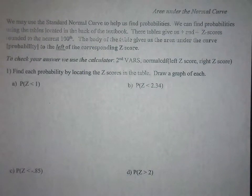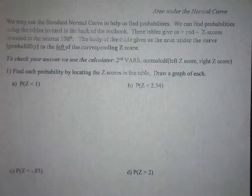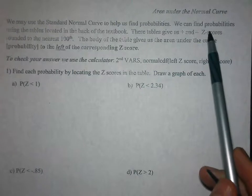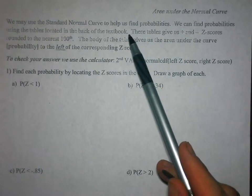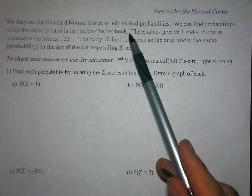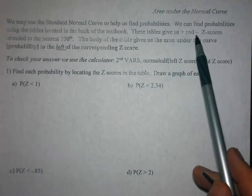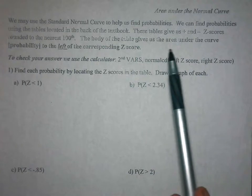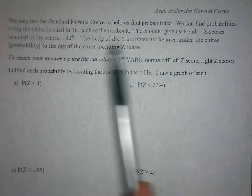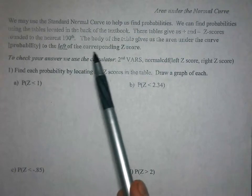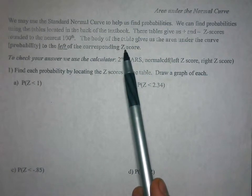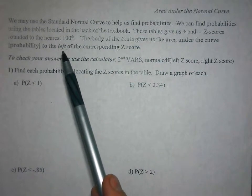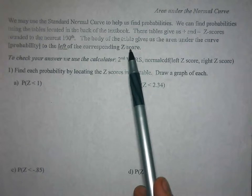We're going to look at the area under the normal curve, and we're going to use the standard normal curve to help us find probabilities, where probability and area are very closely related to each other. We can find probabilities using the tables in the back of the textbook, and I do give you a link online. These tables give us the positive and negative z-scores rounded to the nearest hundredth. The body of the table gives us the area under the curve, or the probability, to the left of the corresponding z-score. That's extremely important to understand — the tables I use give you the area to the left of the z-score.